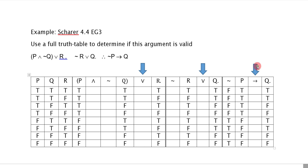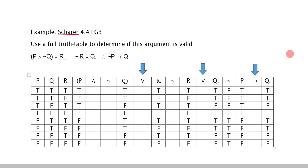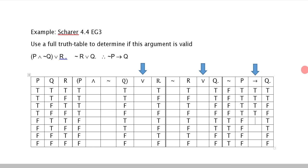When evaluating this conditional, I know the consequent is Q, but the antecedent is not P. The truth value of the antecedent is always symbolized by its main connective, which here is the negation. So to evaluate the conditional truth value, I look at the negation column, which represents the antecedent, and the Q column, which is the consequent. Remember, a conditional is only false in one case: if the antecedent is true and the consequent is false. So wherever the antecedent is false, I automatically know that the conditional is true.